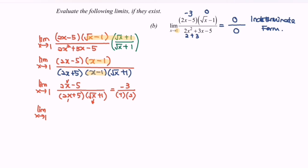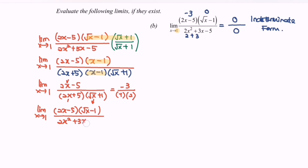So finally, the limit as x approaches 1 of (2x - 5)(√x - 1) over (2x² + 3x - 5) is equal to negative 3 over 14.